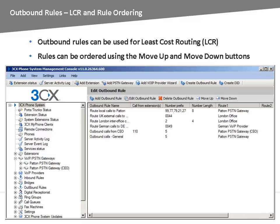Outbound rules come in handy when you are using multiple providers and want to route calls through the different providers. In the example shown in the screenshot, we have configured 3CX phone system to route local calls through the PSTN gateway which is attached to a local line. Since this company does a lot of business in Germany, we purchased a VoIP line from a German VoIP provider, used for all calls starting with the German country code. We have also configured a bridge to the office in London. Any calls starting with 2 or 0044 are routed through this bridge. All the extensions in our London office start with 2, thus no digits need to be stripped for such calls.